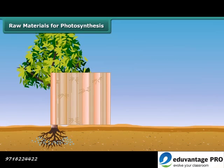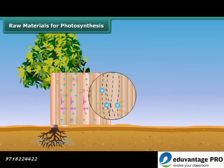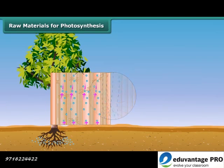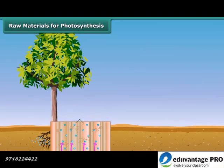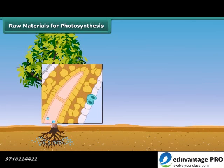These vessels run throughout the root, the stem, the branches, and the leaves. They form a continuous path or passage for water and minerals to reach the leaves.